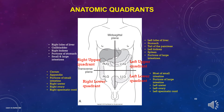The right upper quadrant consists of the right lobe of the liver, gallbladder, right kidney, portions of the stomach, and small and large intestines. The right lower quadrant consists of the cecum, appendix, portions of the small intestine, right ureter, right ovary, and right spermatic cord.